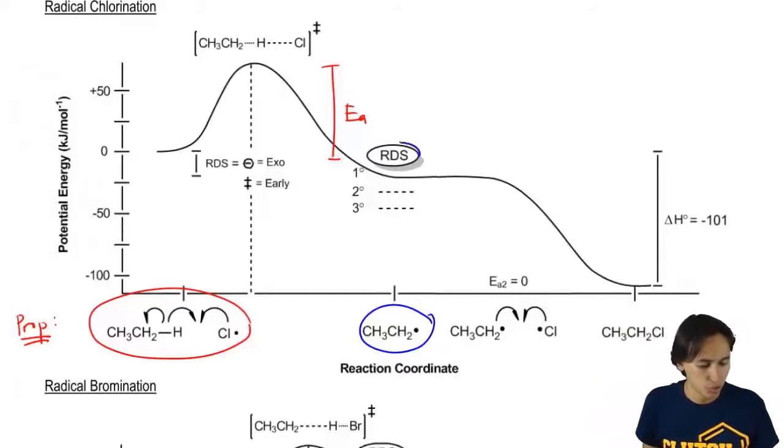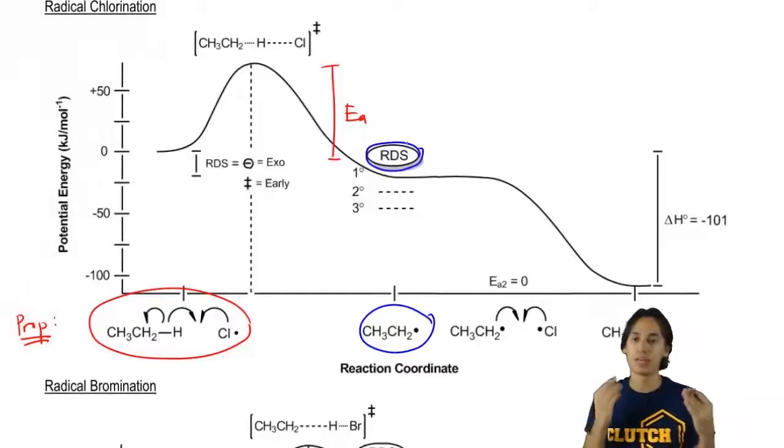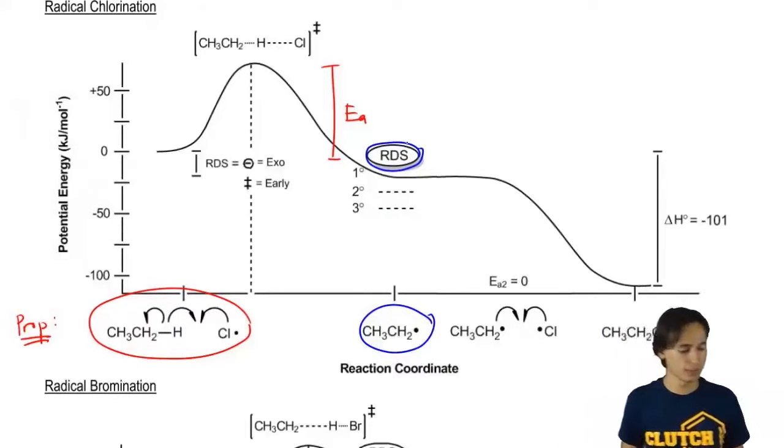Notice that here I put rate determining step. Remember that your slow step, the one that makes the intermediate, is always going to be your rate determining step. Does that make sense so far?